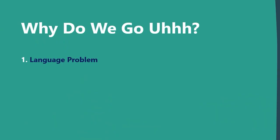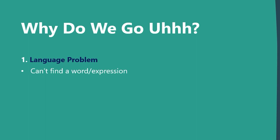There are mainly two reasons why we stumble in our speech. The first one is a language problem — you might just find it difficult to find a word or expression. For example, you're talking about your room and cleaning your room, and you just can't think of the word 'vacuum cleaner.' You might even know the word and recognize it when you see it, but because you haven't used it quite often, you don't have easy access to that word. This is identified as a language problem.